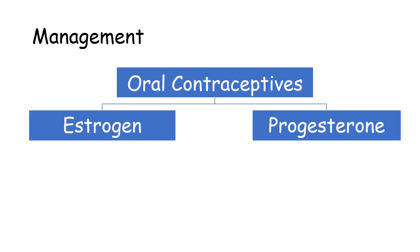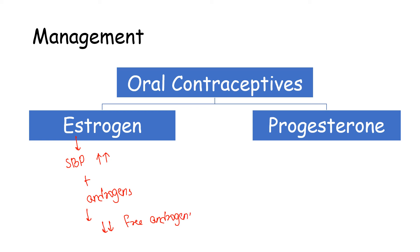For management, we treat the patient with oral contraceptives, which contain two compounds: estrogen and progesterone. Estrogen acts on steroid binding protein and increases its level, so more androgens bind to it, reducing free androgen levels and decreasing their effect. Progesterone exerts a negative feedback on luteinizing hormone, which normally acts on the ovary to produce testosterone, thereby reducing the symptoms of hirsutism.